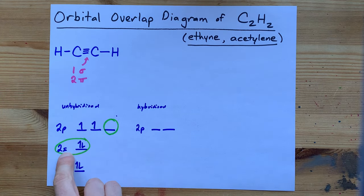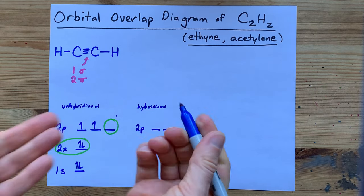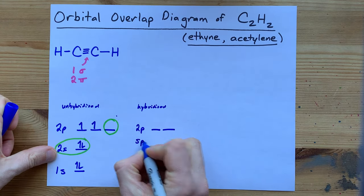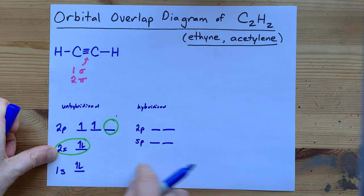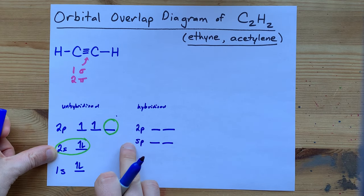It doesn't actually matter which one you take. If you're combining a single s and a single p, you might recognize that that makes an sp hybrid orbital. Get it? 1s, 1p, s, p.